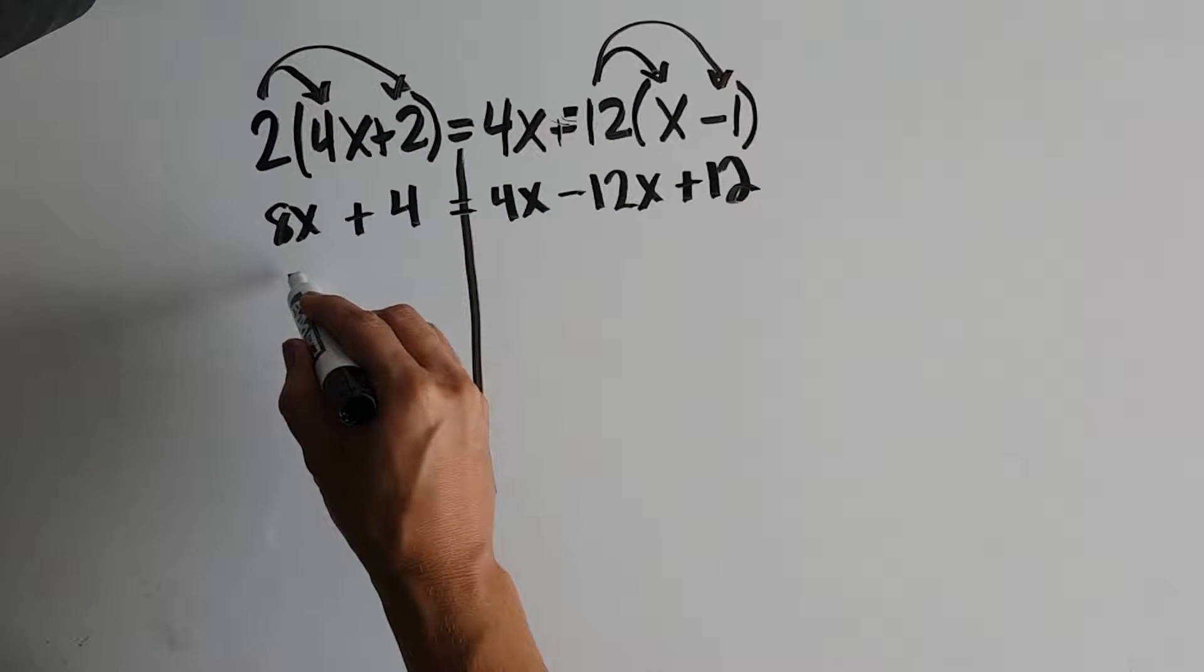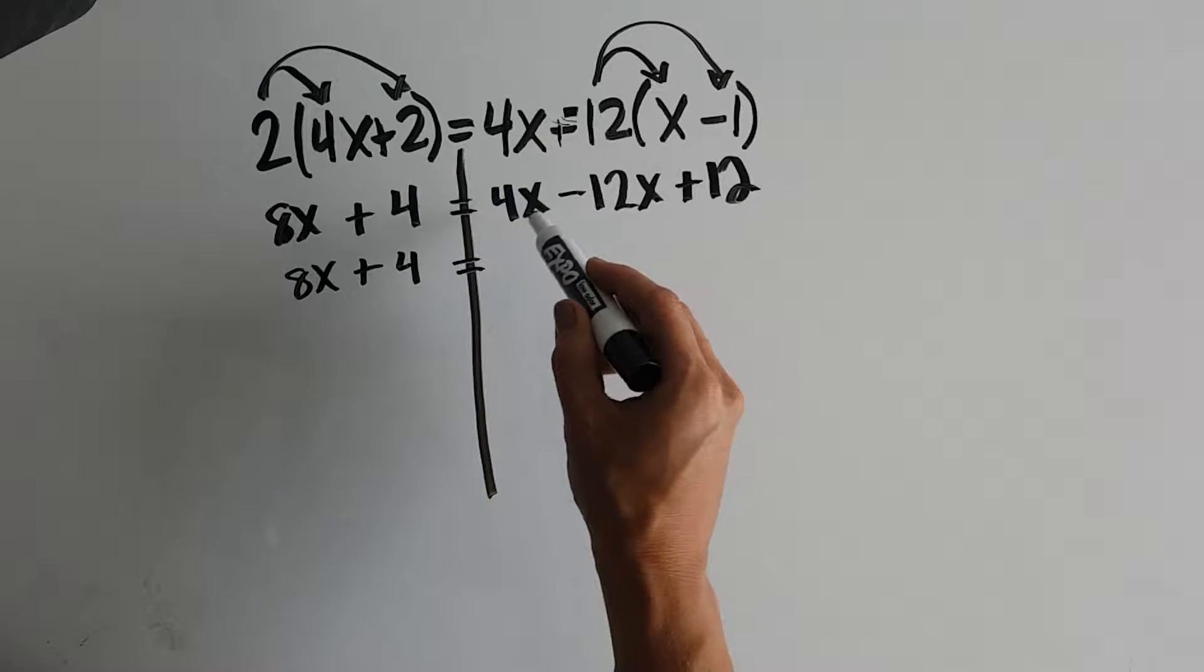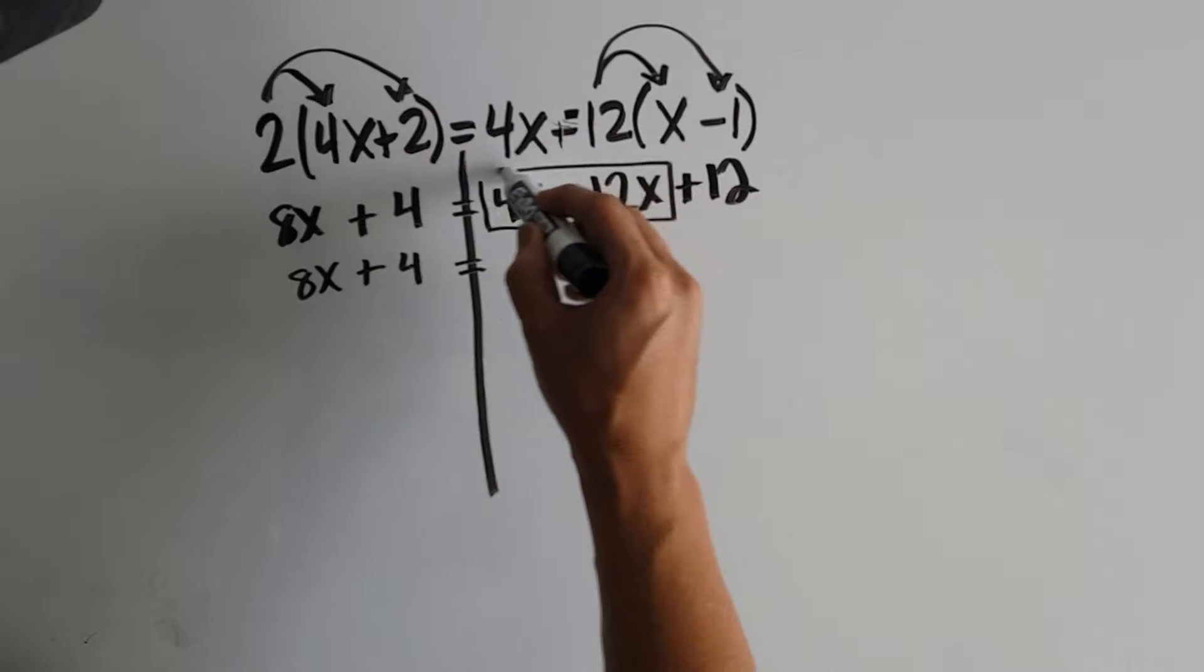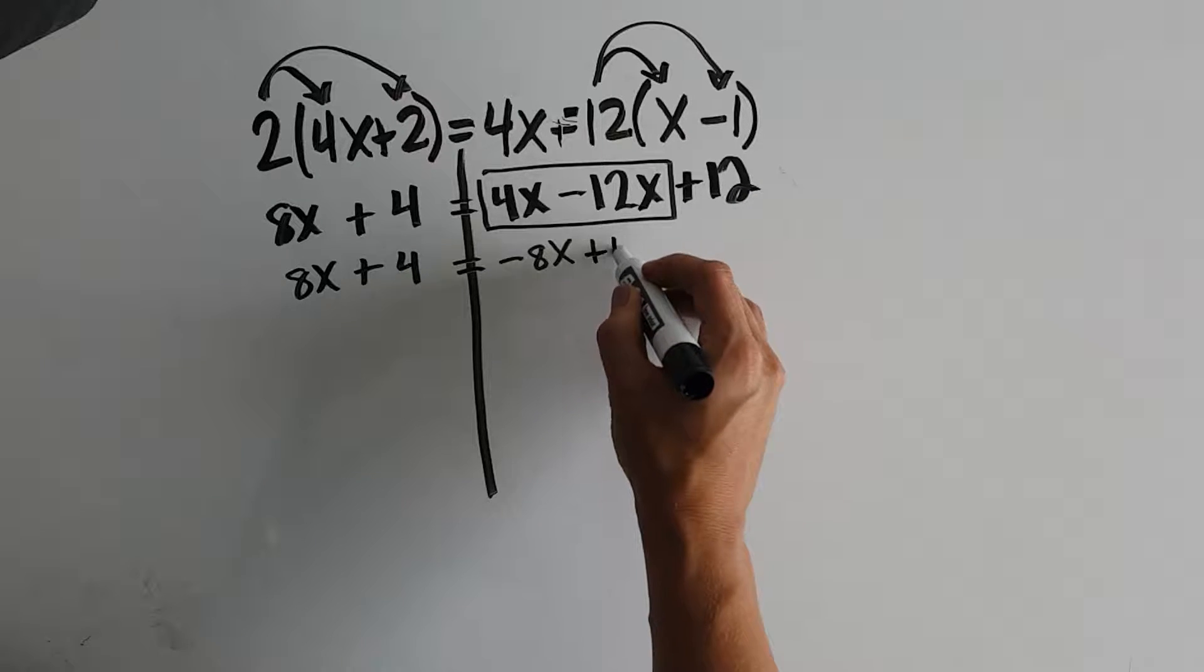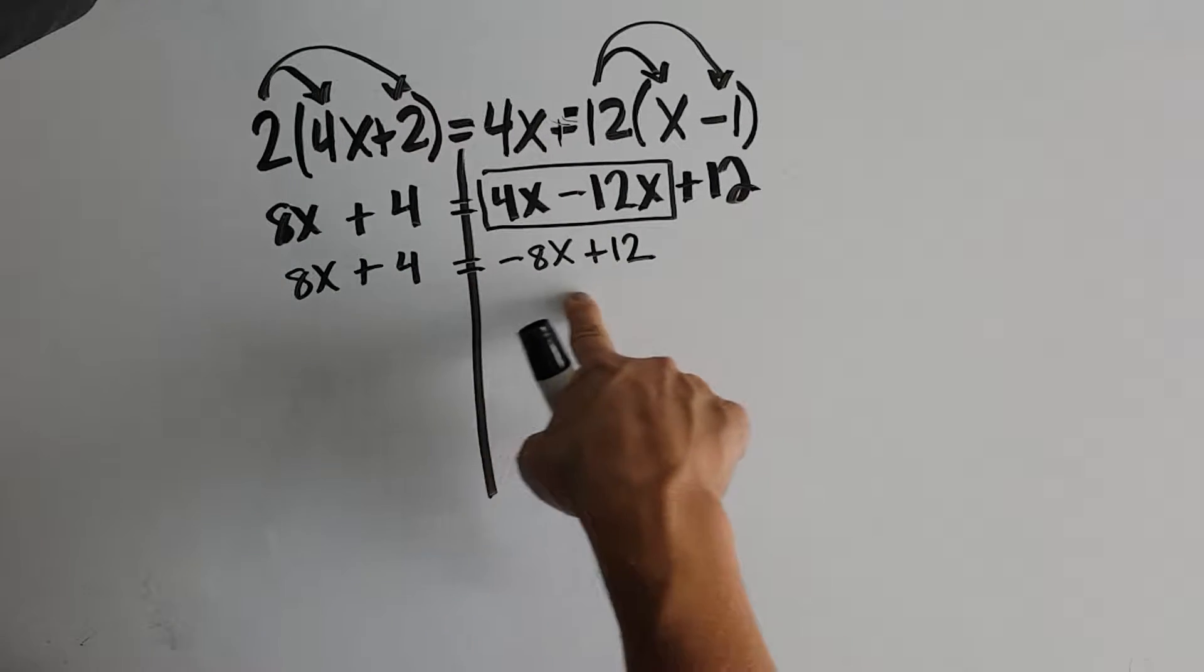So the left side is still simplified, so I'm just going to rewrite it. But the right side, we can combine these like terms. 4x minus 12x is negative 8x. And then we have plus 12. So step 1 is done. We've simplified the left. We've simplified the right.